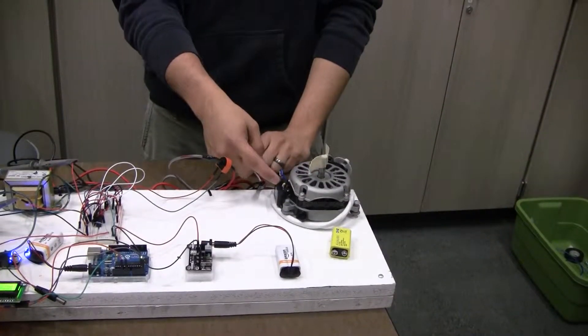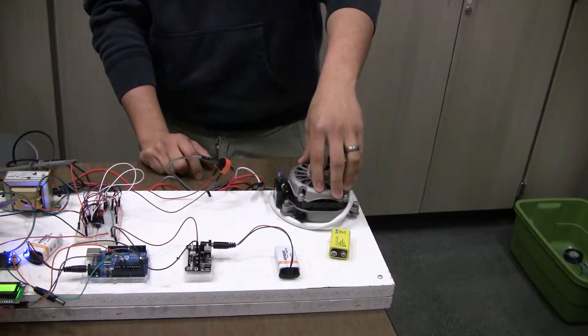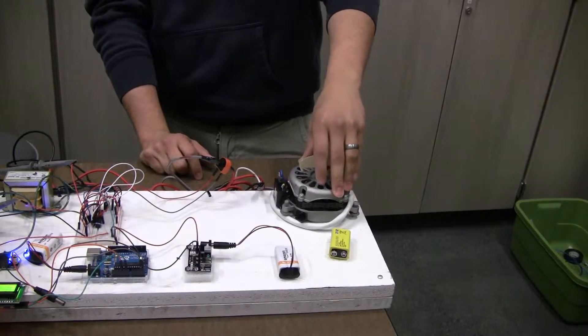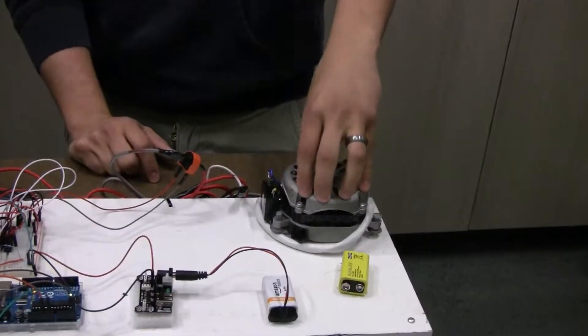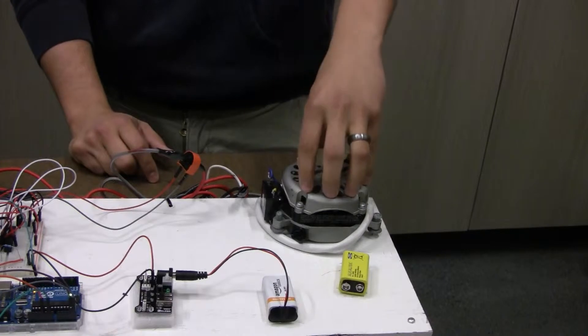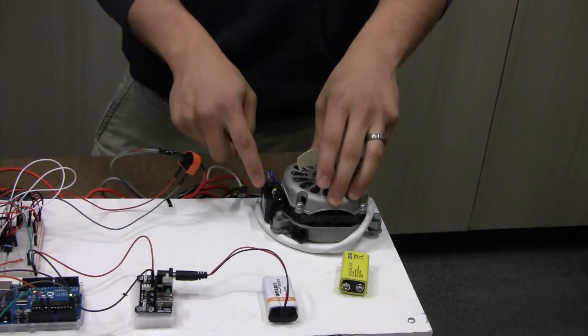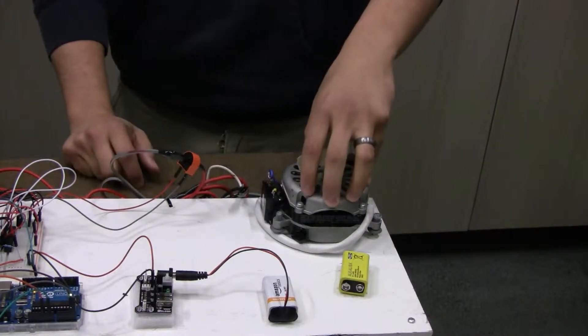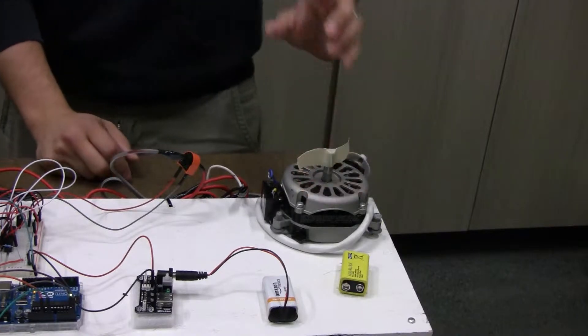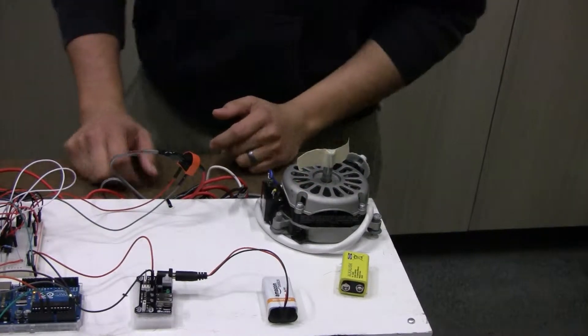Here we have an induction motor with the capacitor. Induction motors use active and reactive power. When you pay your electricity bill, you pay for both of them. In order to reduce reactive power, you add a capacitor in parallel with the inductor and that increases your power factor.